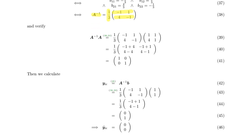The result is the inverse shown here. It is easy to verify that A-inverse is correct by multiplying it with A, which results in the identity matrix. Once we have the inverse, we calculate the constant solution by multiplying it with B, and the resulting vector is [0, 1]. The time derivative is of course a zero vector because we have a constant solution.